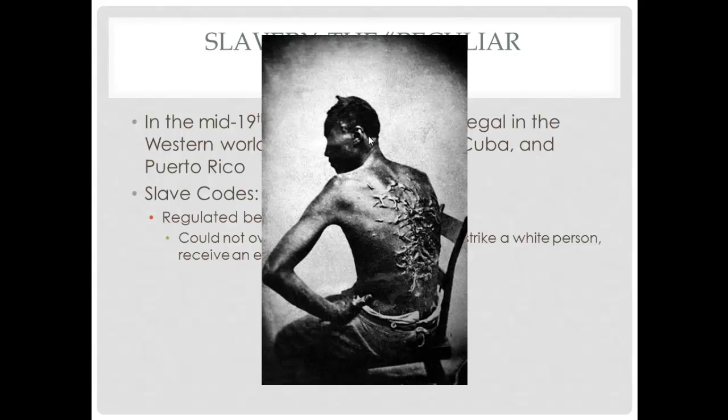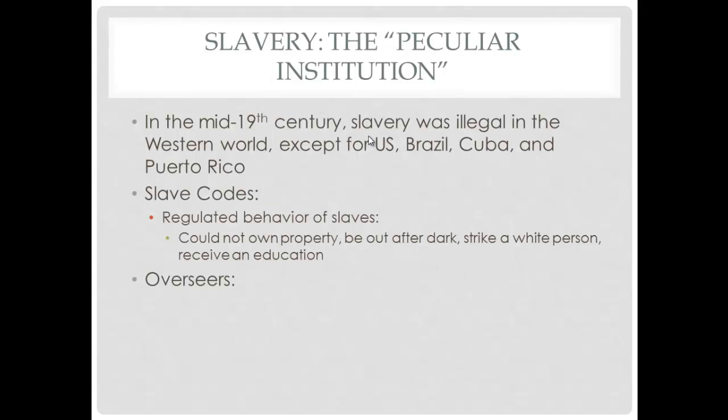Punishments varied but could be very severe — this famous picture from the time shows a man's back covered in scars from being whipped. Overseers on plantations were in charge of slaves in the fields and were often harsh and brutal. They did not usually own the slaves; their job was to ensure slaves worked as hard and as much as possible.